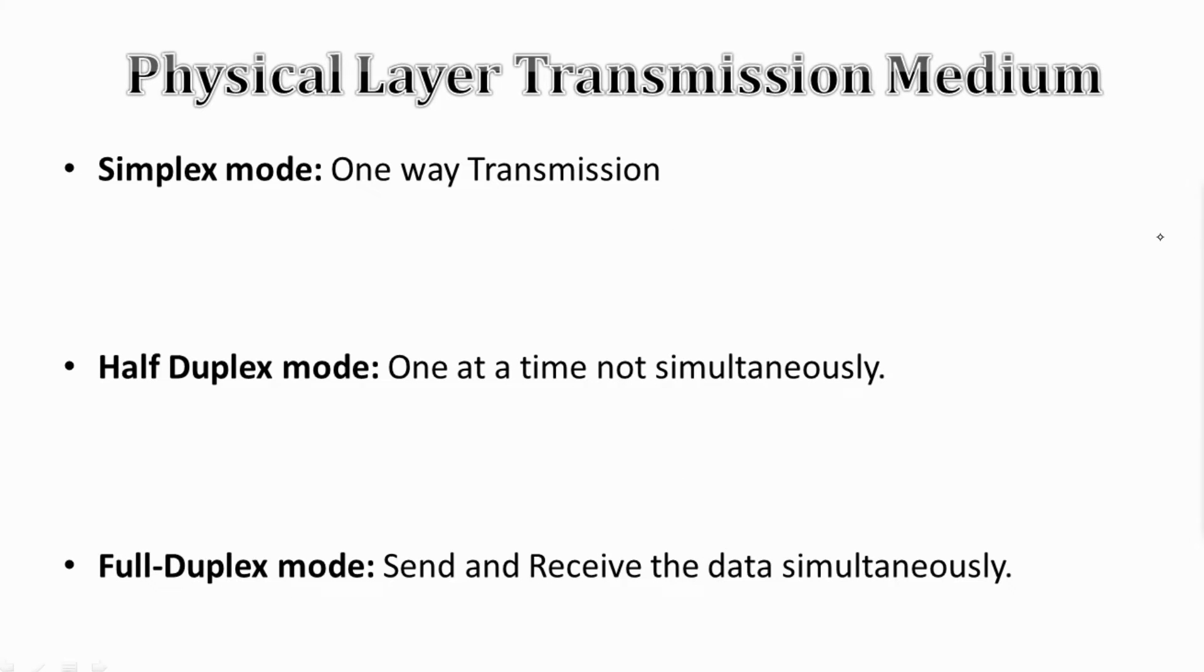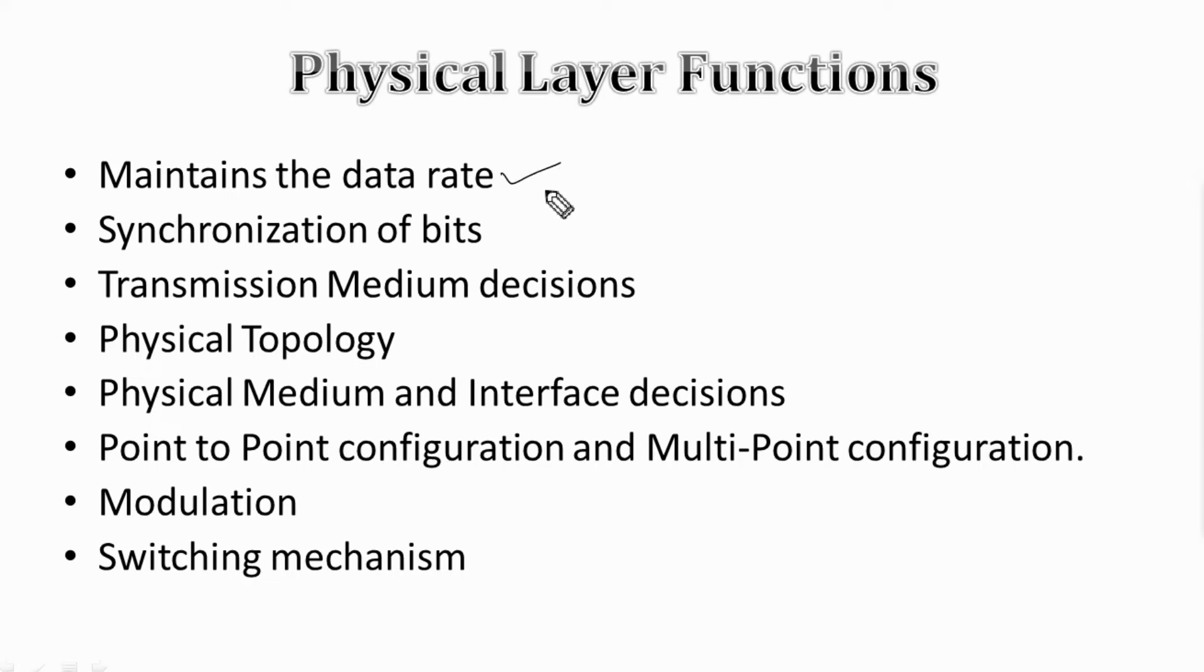Let's summarize the overall functions performed by the physical layer. It maintains data rates, performs synchronization of bits, helps in transmission medium decisions, physical topology, provides physical medium and interface decisions, offers point-to-point and multipoint configurations, provides modulation, and offers a switching mechanism to forward data packets from the sender port to the destination port.